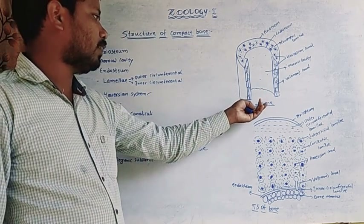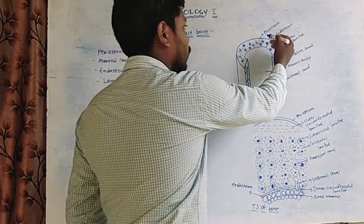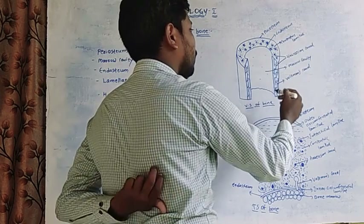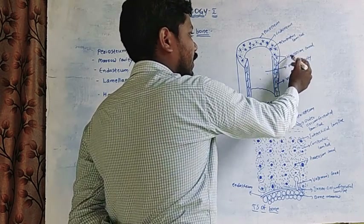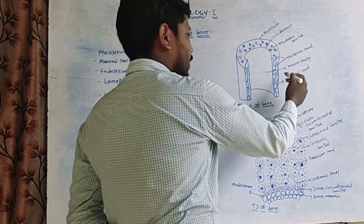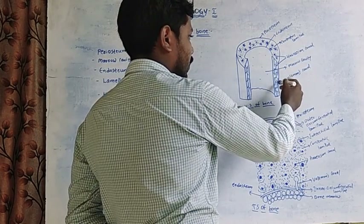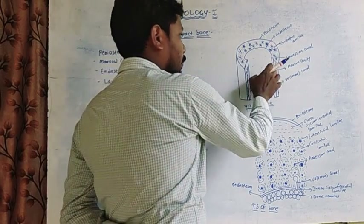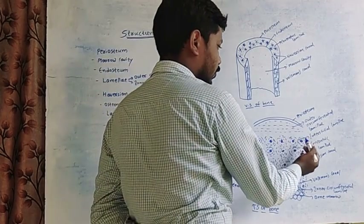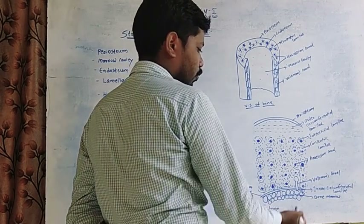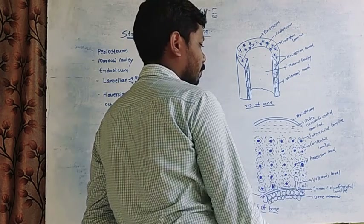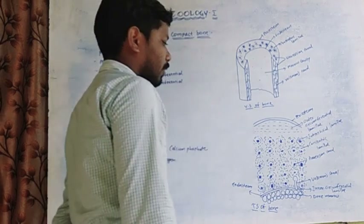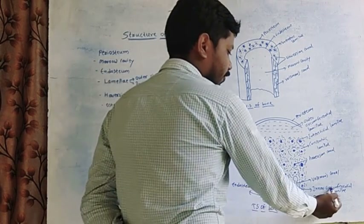Here we can observe the transverse section and longitudinal section of bone. This is the periosteum, and this is the endosteum. The concentric lamellae are connected with the Haversian canal. Also visible are the marrow cavity, Volkmann's canal, Haversian canal, concentric lamellae, interstitial lamellae, outer circumferential lamellae, inner circumferential lamellae, and bone marrow.